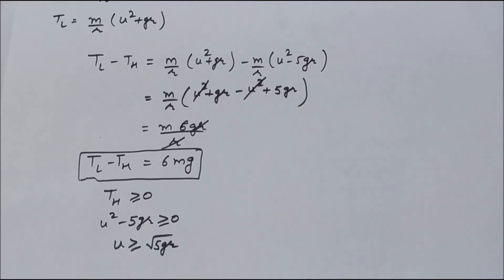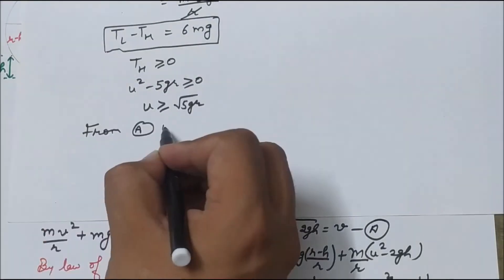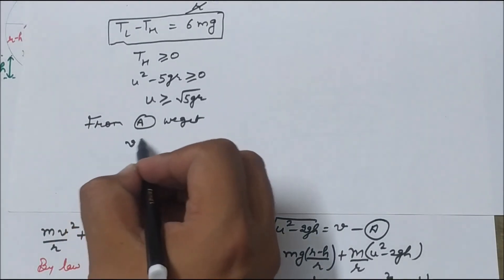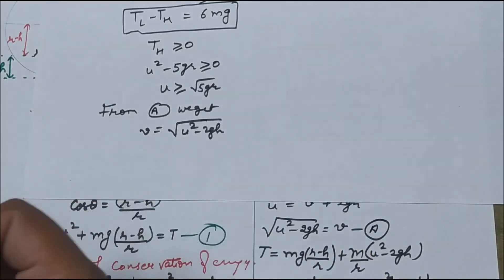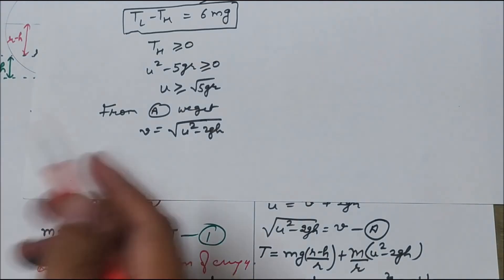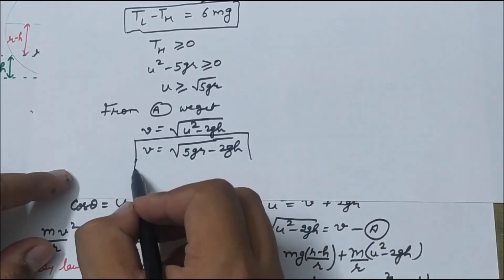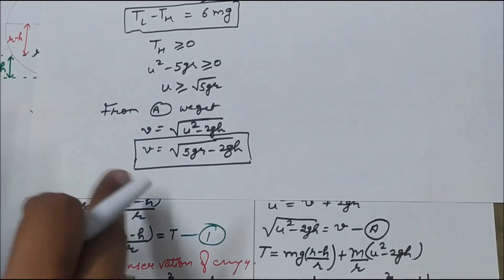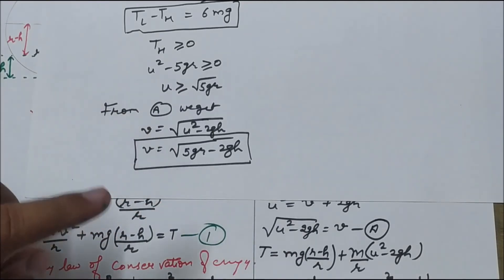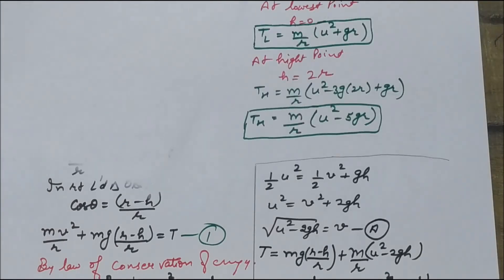Now we evaluate the value of v at any point P. From the energy equation, v equals root of (u² minus 2gh). The minimum value of u equals root 5gr. Using this formula you can evaluate the instantaneous velocity at any point in this vertical circle.